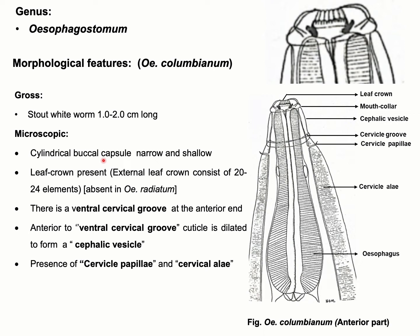The first feature is the buccal capsule, which is cylindrical, narrow, and shallow. There is both an internal and external leaf crown. For Oesophagostomum radiatum, however, the leaf crown is absent.